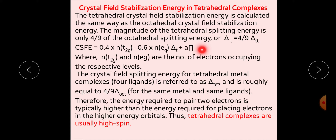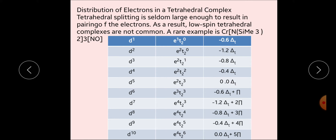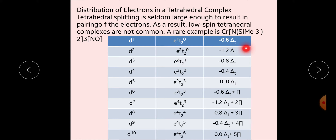E में electron जाते हैं तो energy release होती है, multiplied by minus 0.6. D1 configuration में: E1 T2(0), energy = minus 0.6 del T. D2 configuration में splitting के बाद configuration E2 T2(0), energy = minus 1.2 del T. D3 configuration में E2 T2(1): minus 1.2 plus 0.4 = minus 0.8 del T. D4 में configuration E2 T2(2) होगा और splitting energy minus 0.4 del T होगी।